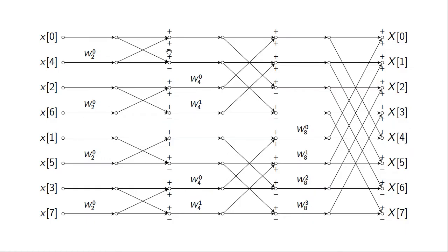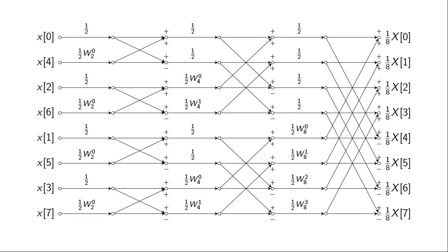If you have two numbers whose magnitudes are close to one, their sum could exceed one in magnitude. This is relatively easily fixed within the FFT algorithm. One can ensure that whenever you add two numbers, they always have a magnitude less than one half, so their sum has magnitude less than one. You do this by introducing multiplications by one-half at various places throughout the algorithm, which causes a computation of one over N times the discrete Fourier transform — a scaled version — but guarantees no overflow in any branch.